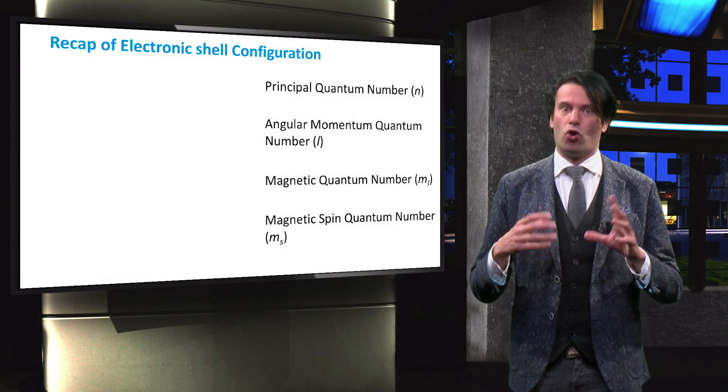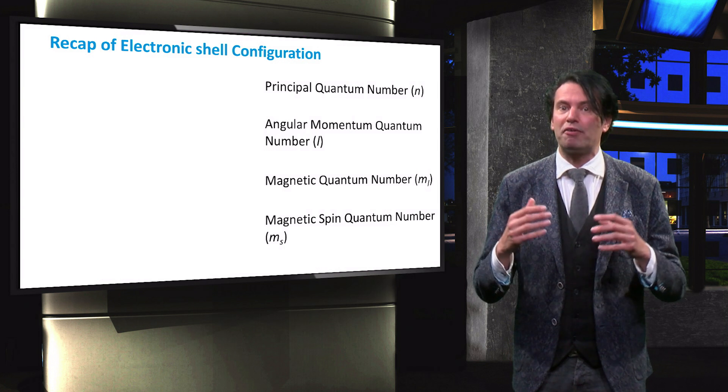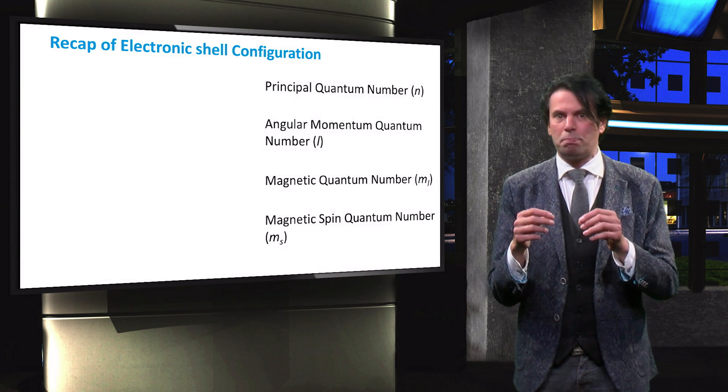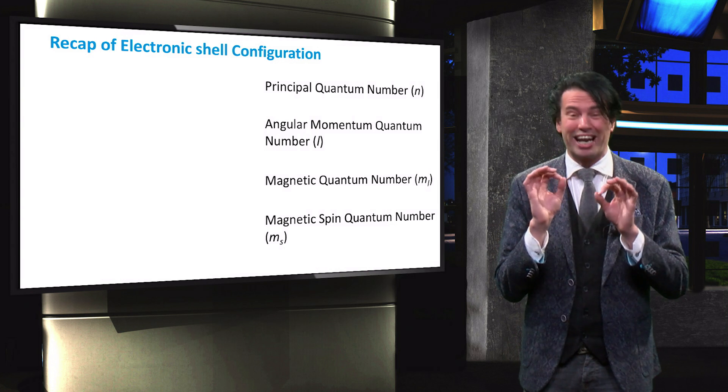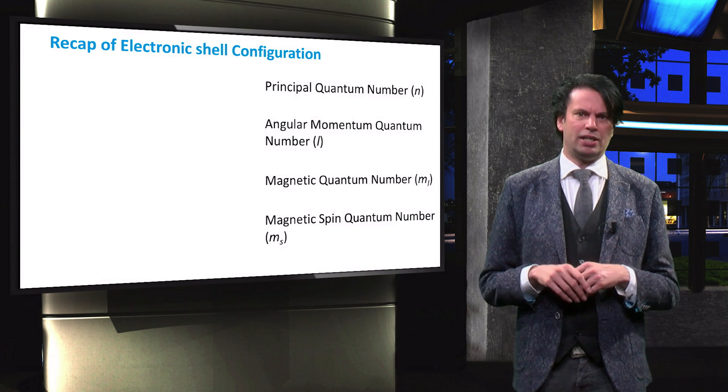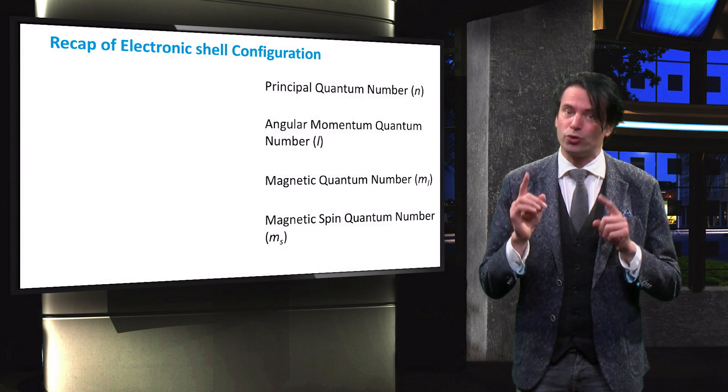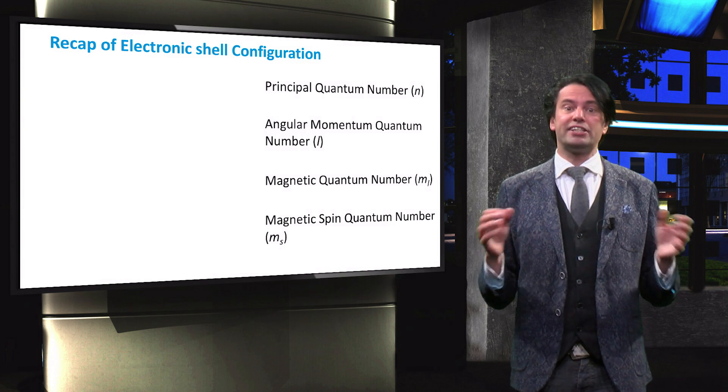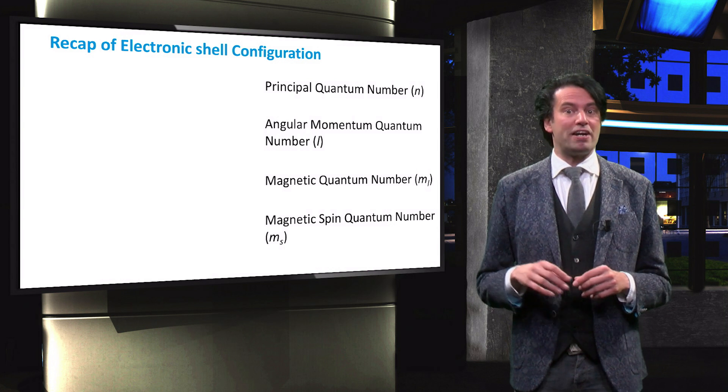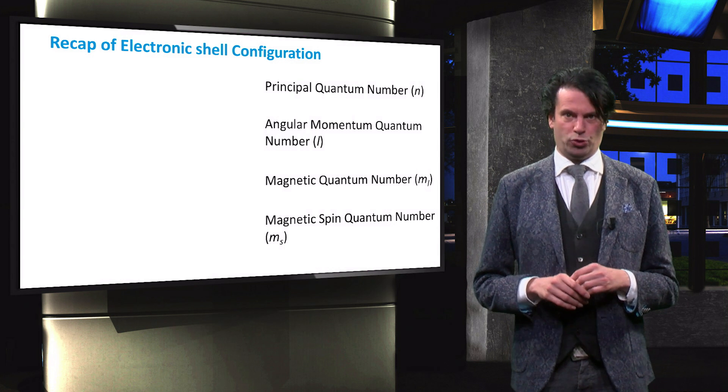It is important to know that these orbitals refer to the area where an electron with a particular energy is most likely to be found. This is unlike an orbit, which has a defined radius. The characteristics of an electron are described by four different quantum numbers.